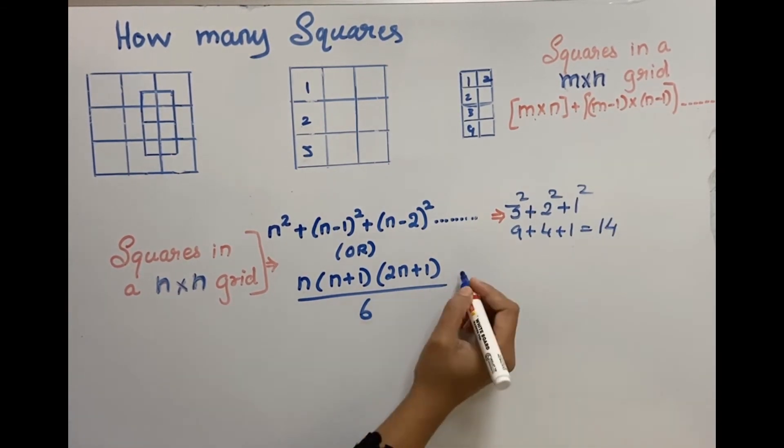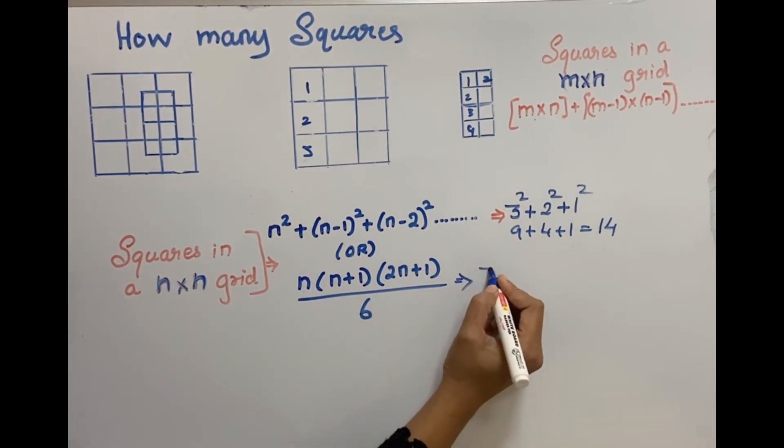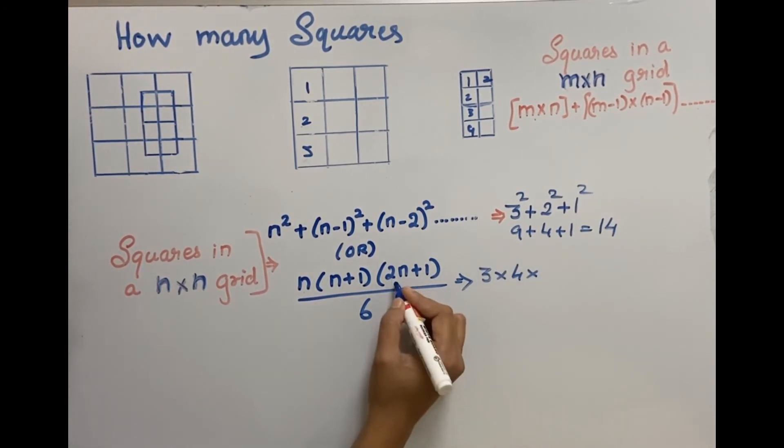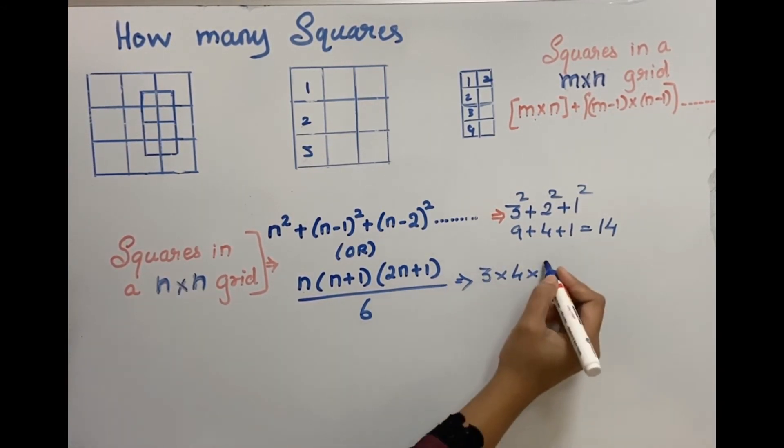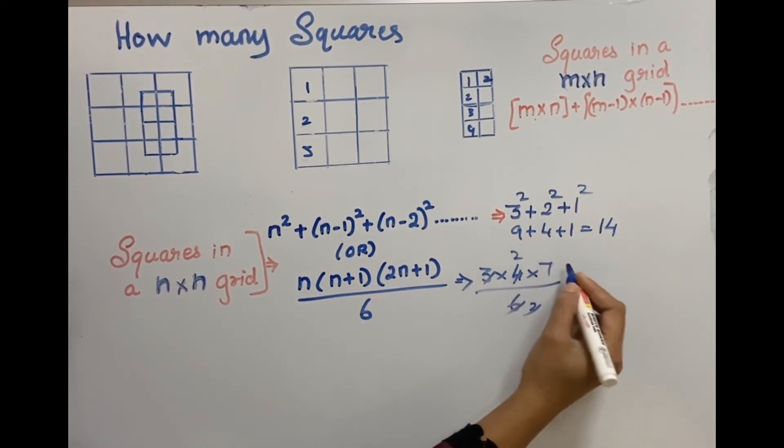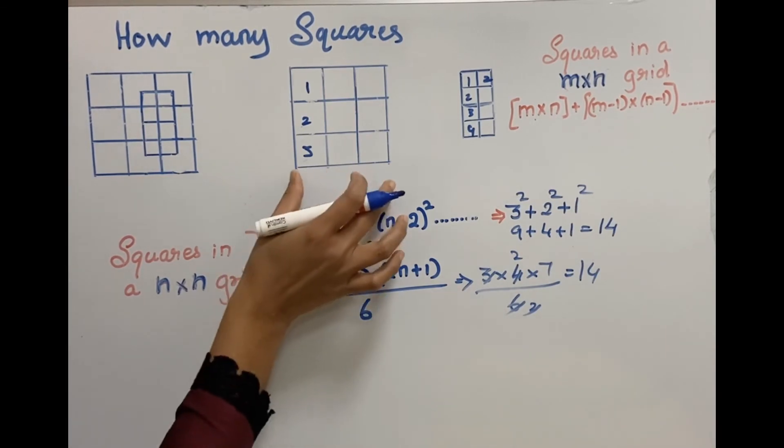Now the summation is 14. And by this formula also, you can try it. n is 3, n plus 1, then this 1, 2 into 3, 6 plus 1, so 14. Outer part, it's 14.